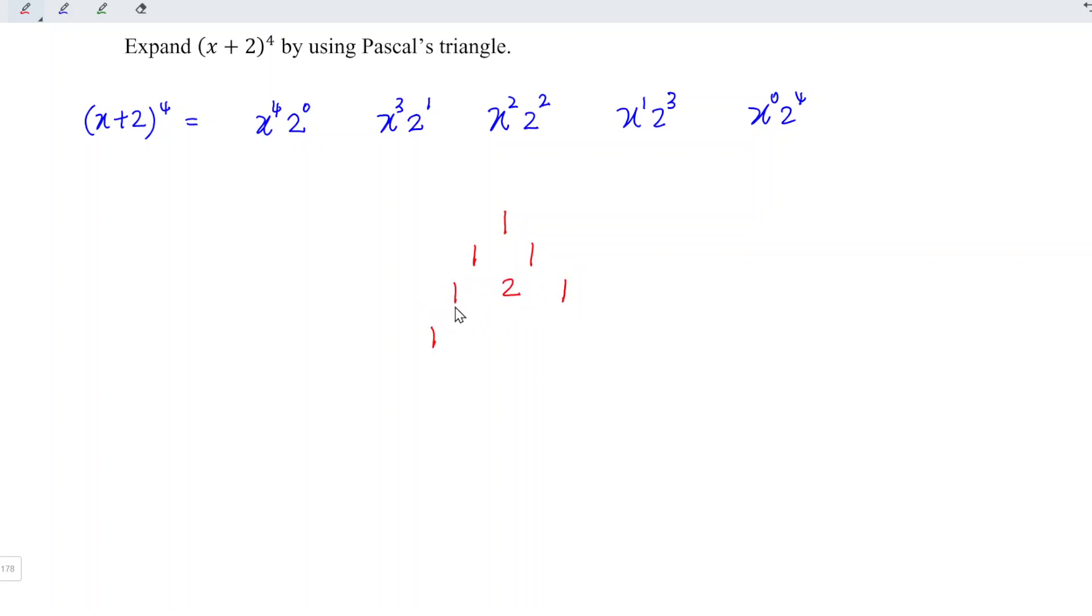1 plus nothing is 1. 1 plus 2 is 3. 2 plus 1 is 3. 1 plus nothing is 1. Then 1 plus nothing is 1. 1 plus 3 is 4. 3 plus 3 is 6. 3 plus 1 is 4. 1 plus nothing is 1.